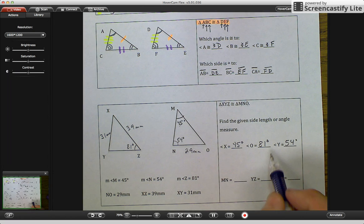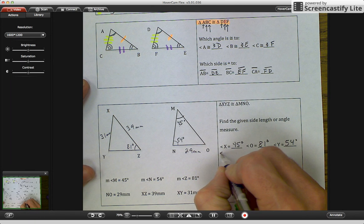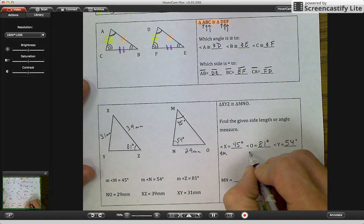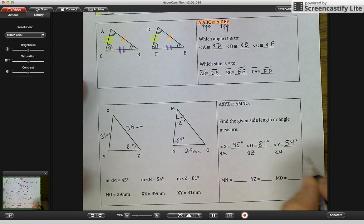So that's how you figure out your measurements. And I'll put it under here. Angle X was angle M. Angle O was angle Z. And angle Y is angle N. And that's how we figure out the measurements.